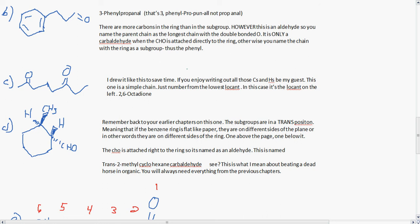Letter D, remember to look at your earlier chapters on this one. The subgroups are in a trans position, meaning that if the benzene ring is flat like paper, they are on different sides of the plane. One above the page, one below the page. The CHO group is attached to the ring, so this is an actual aldehyde. This is named trans-2-methyl-cyclohexane-carbaldehyde. This is what I mean about beating a dead horse in organic. You will always need everything from the previous chapters.